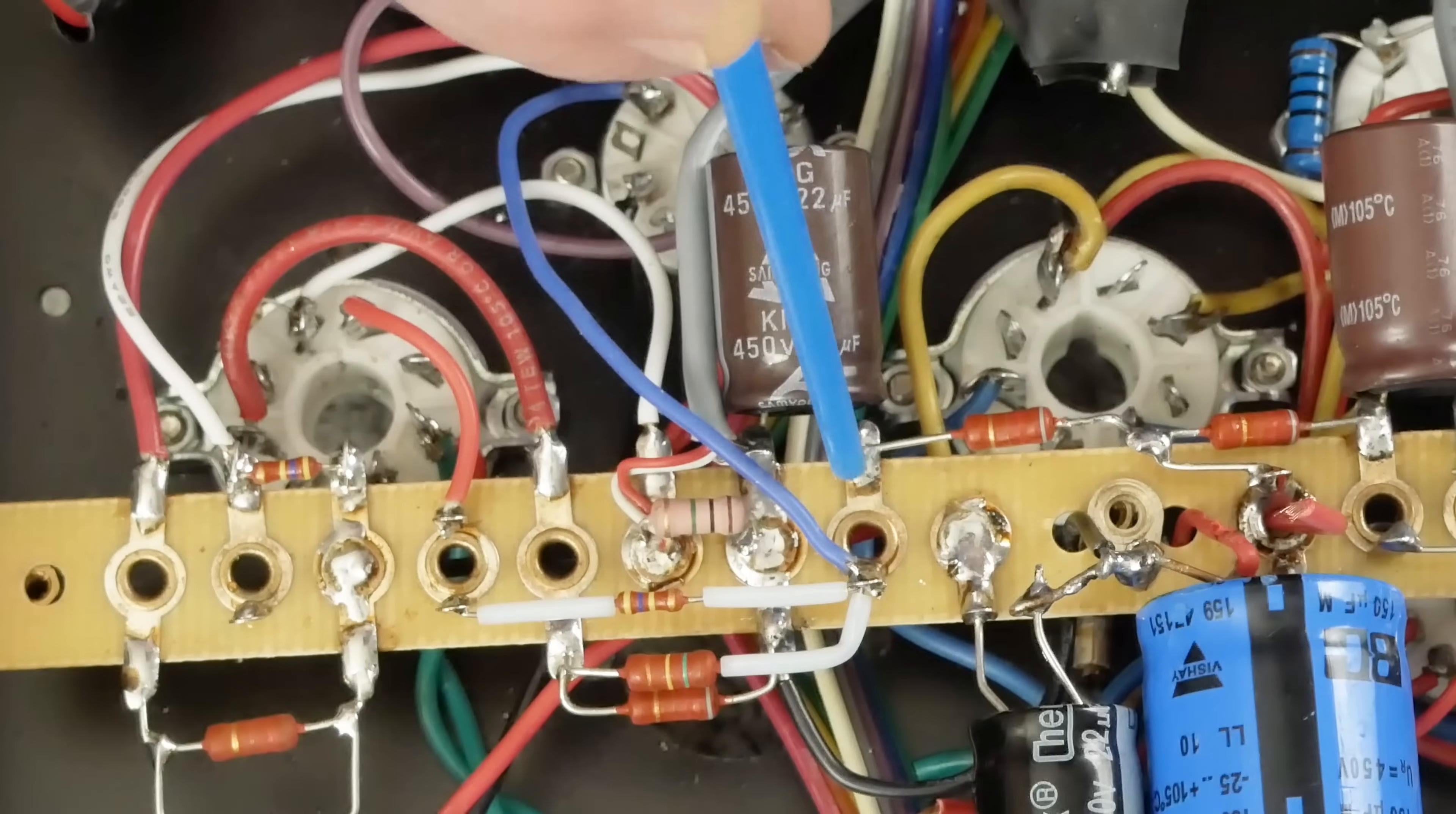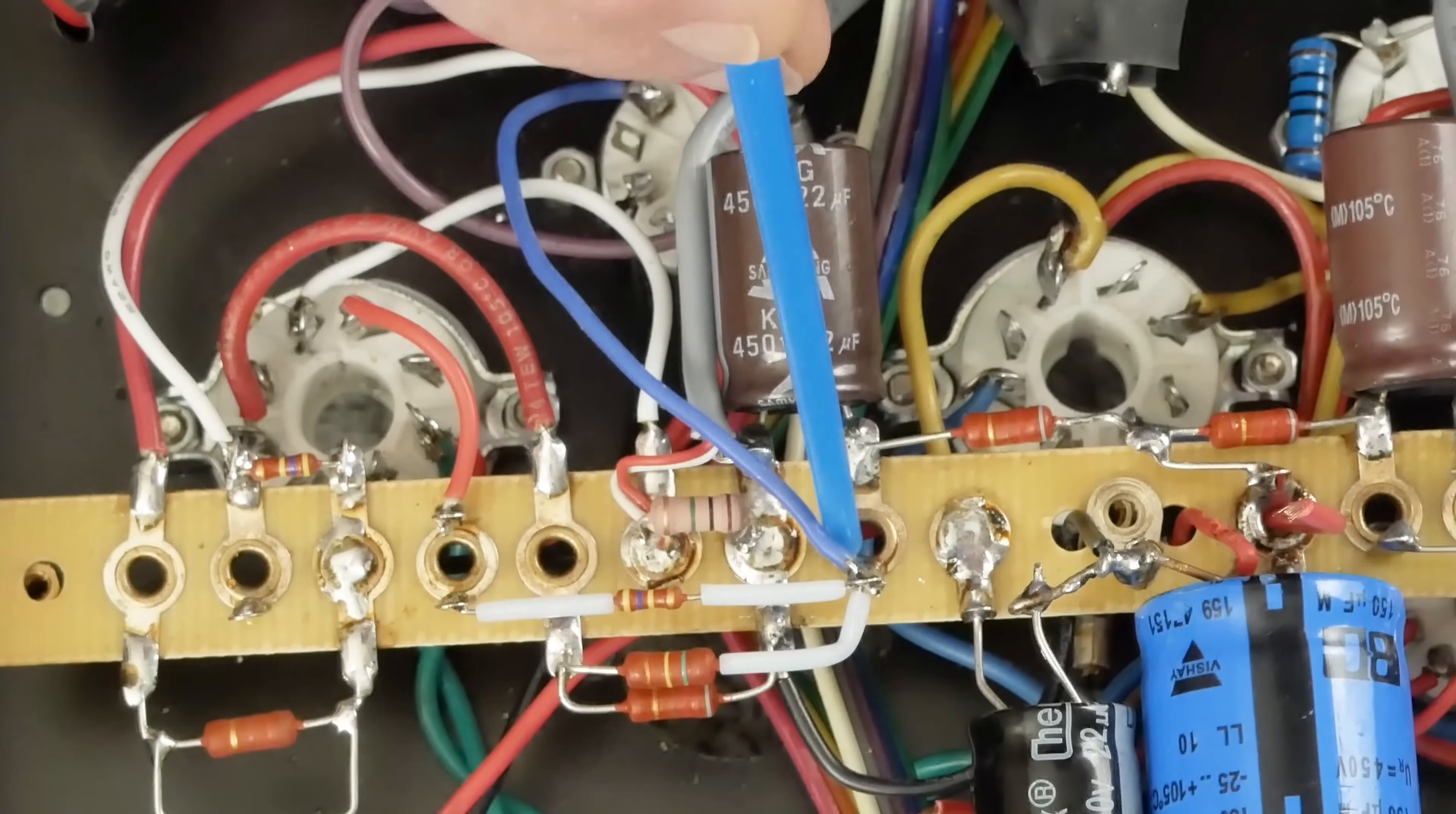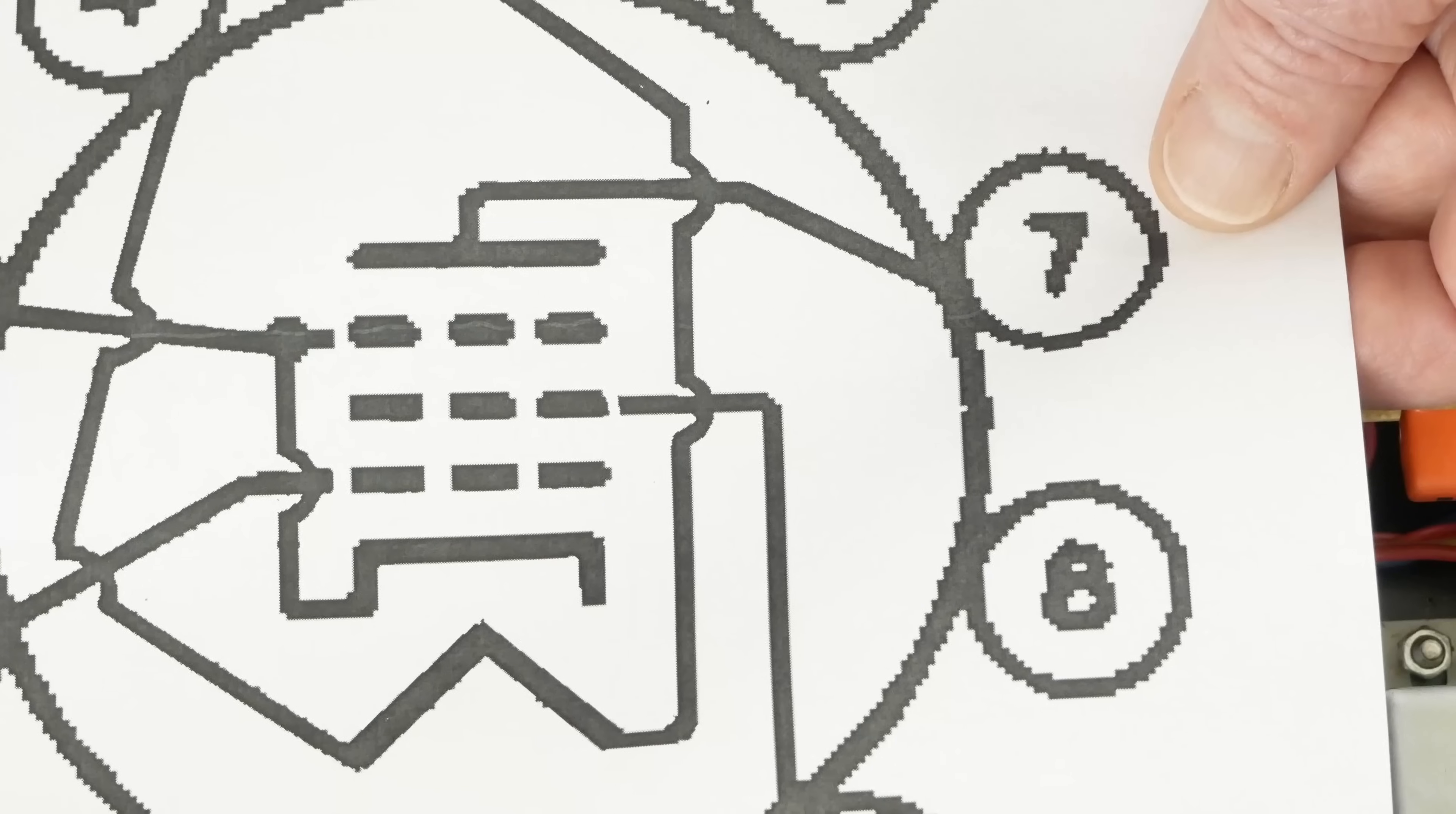So we have our 255 volts sitting right here. This is our 22UF cap. If you remember, this is a ground. You can see the black wire back here. So this is ground. This is 255 volts. This blue wire right here, we've got it run down to pin 9 on our output tube. Pin 7 is the plate, and that is where the output transformer lead connects to.